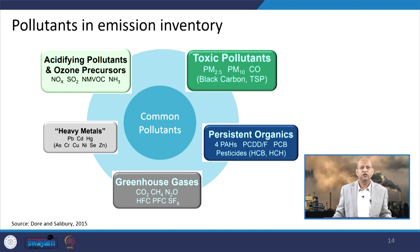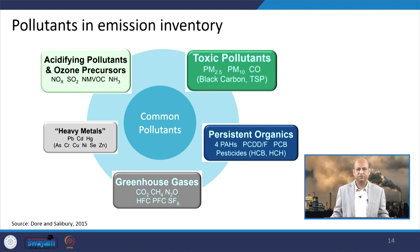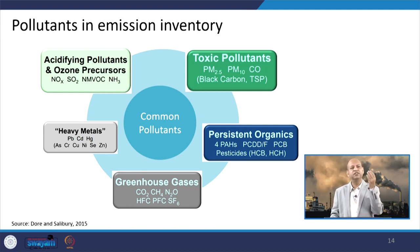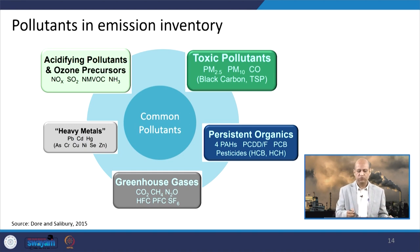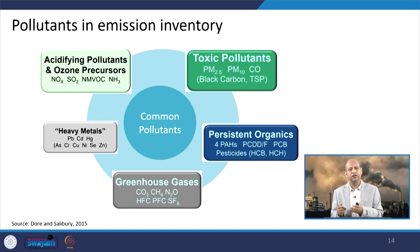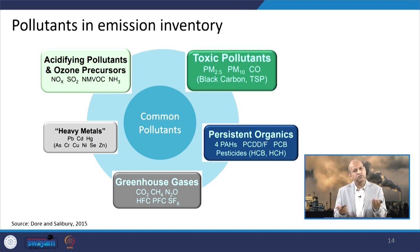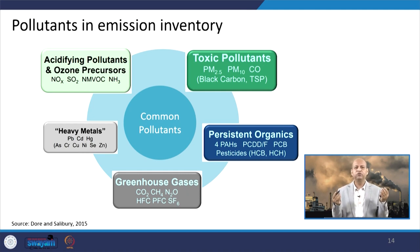The pollutants considered in an emission inventory depend upon its intended use. If you want to model acid rain effects, you develop an inventory for acidifying pollutants like NOx and SOx. If you want to see health impacts of particulate matter and CO, you develop an inventory for those toxic pollutants. You can develop heavy metals related, persistent organics related, or greenhouse gas related emission inventories — it varies depending on the problem you want to solve.